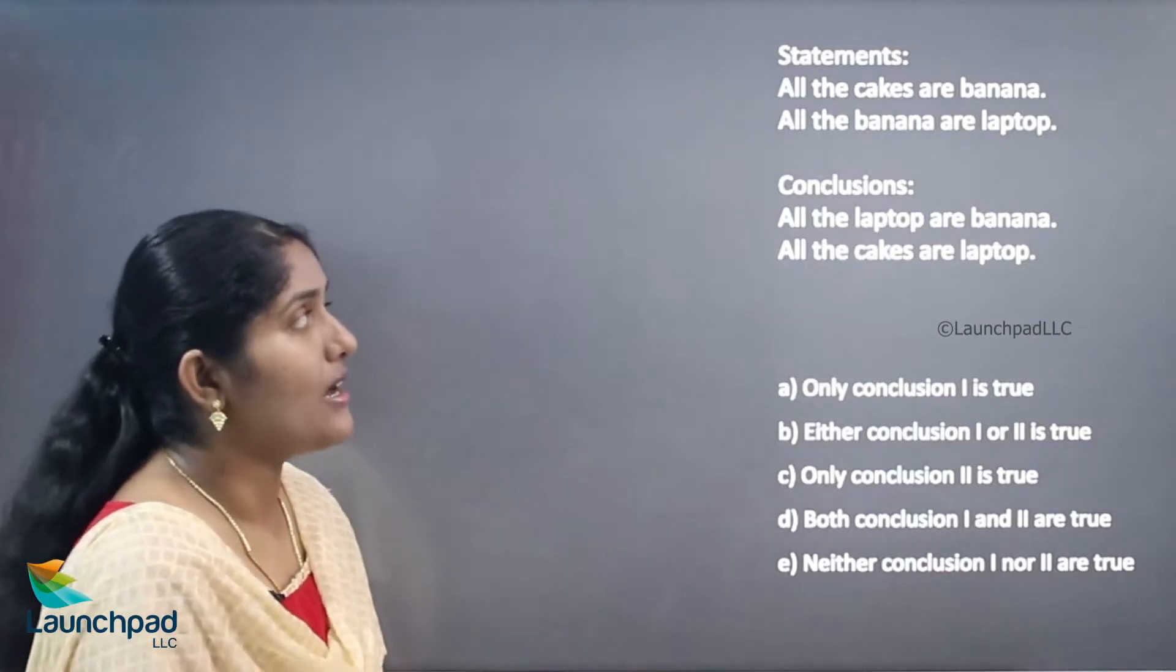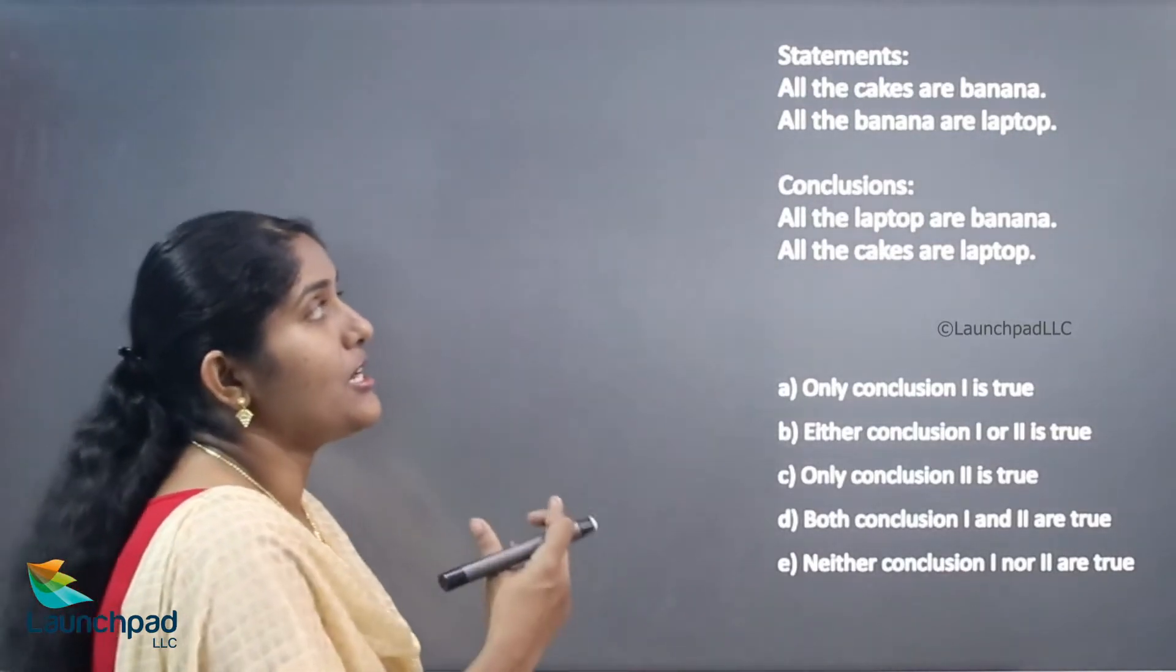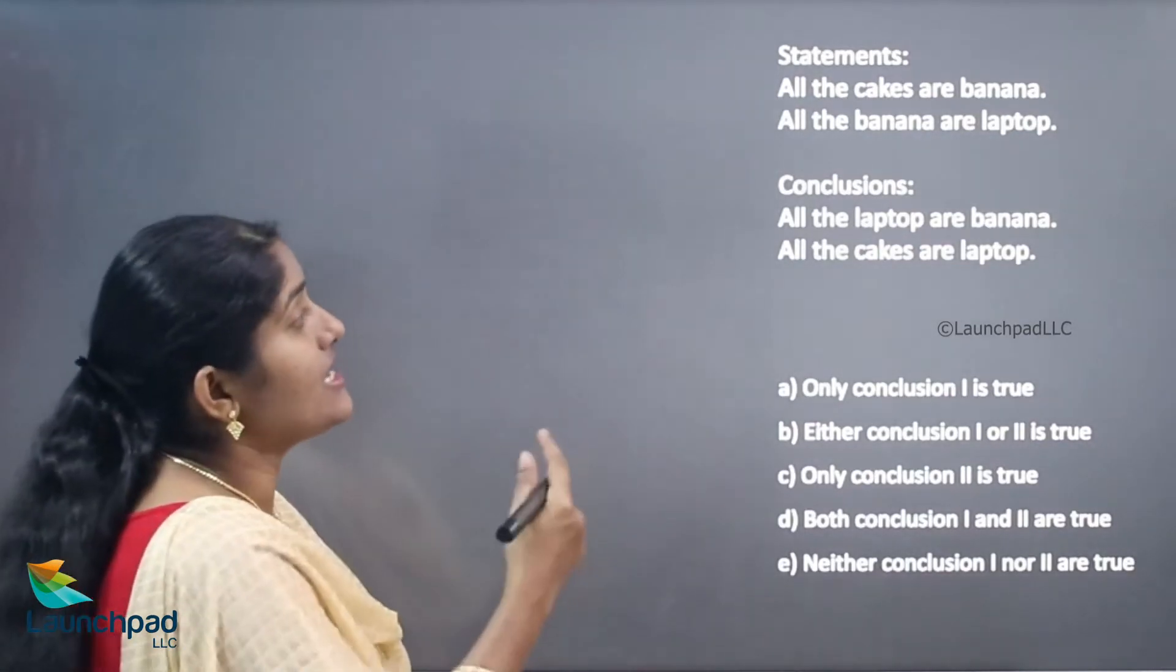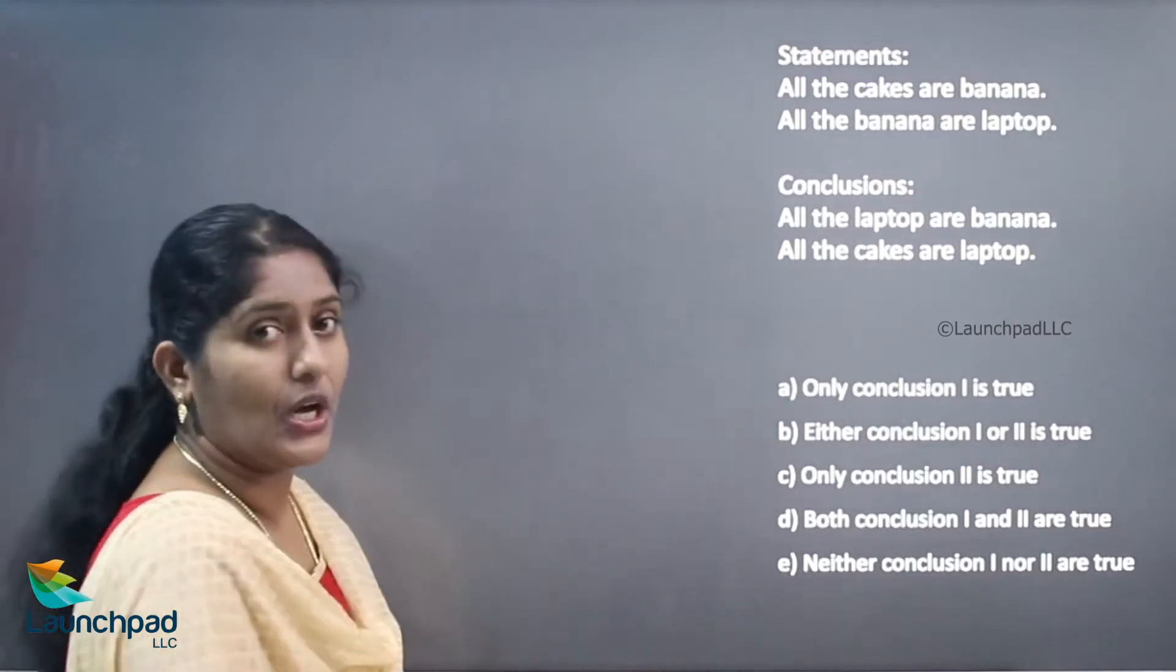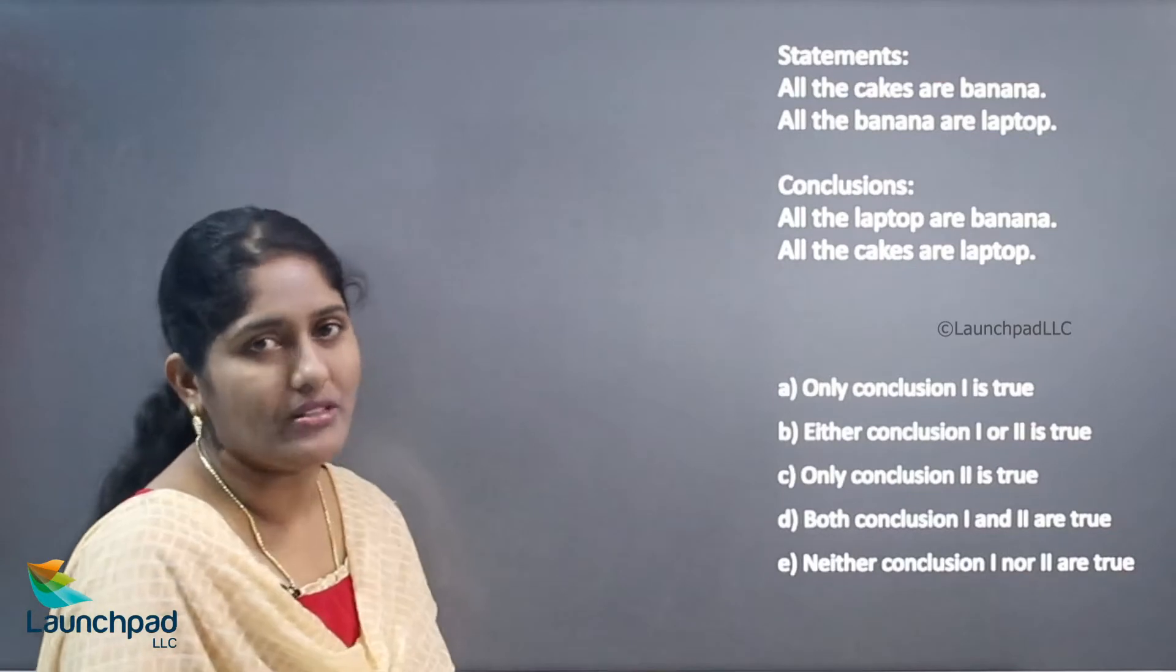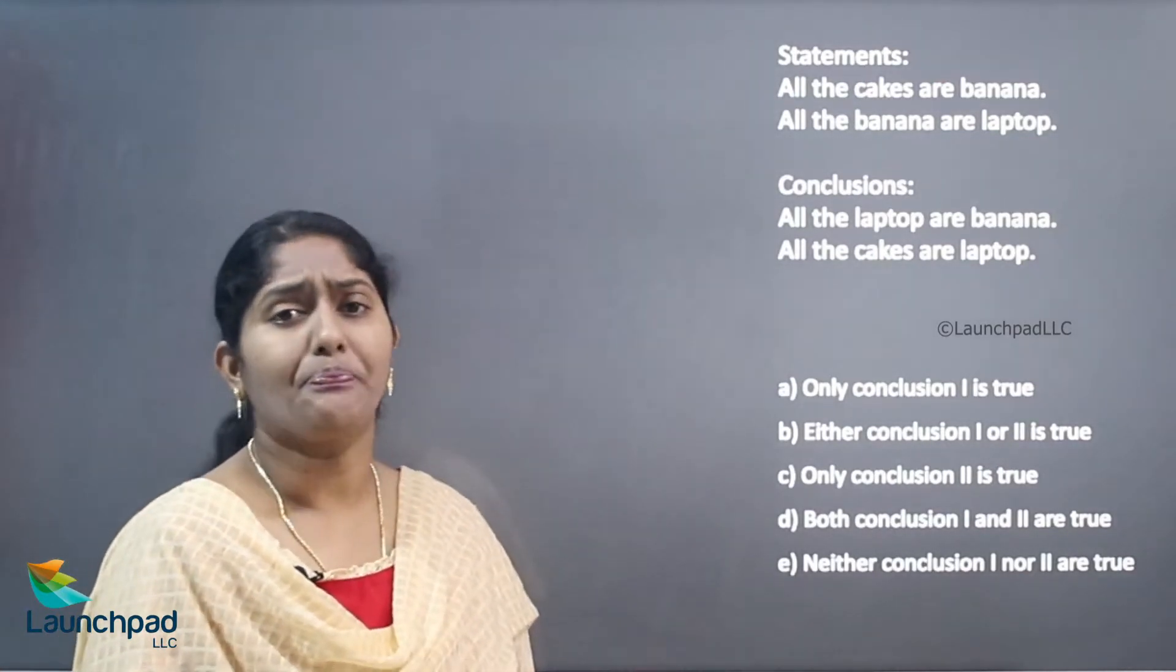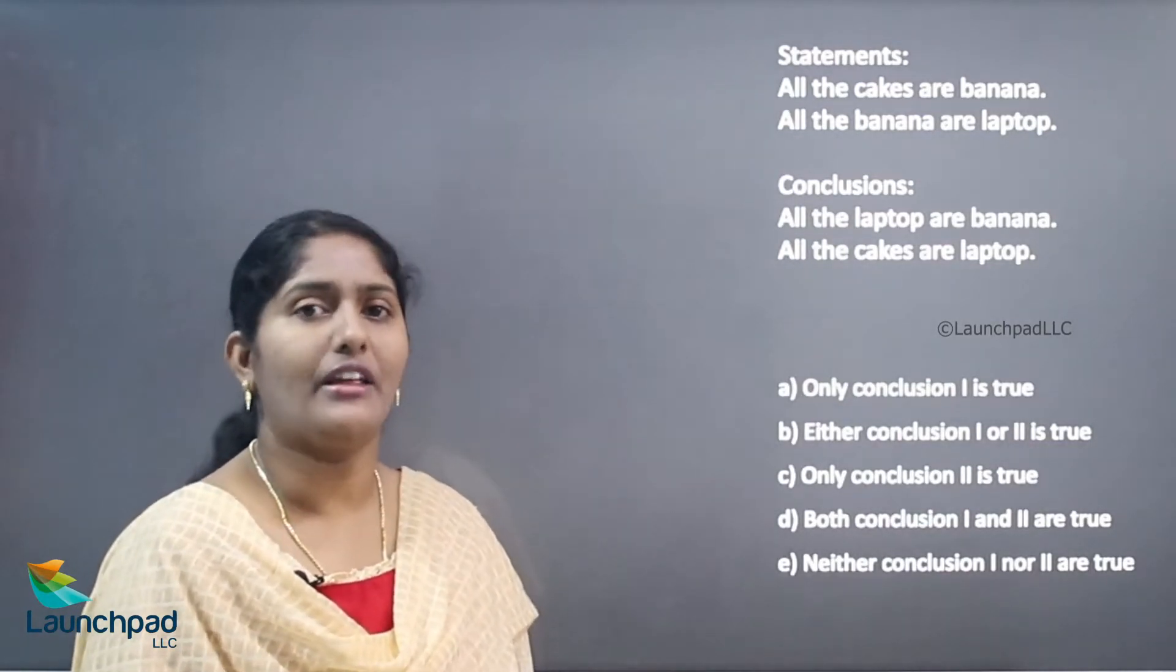For example, all the cakes are banana, all the banana are laptop. Here the first two lines are your statements and the next is your conclusion. So we want to find out which conclusion is based on the given statement. By means of using the Venn diagram, we can find out which conclusion is correct for the given statement.